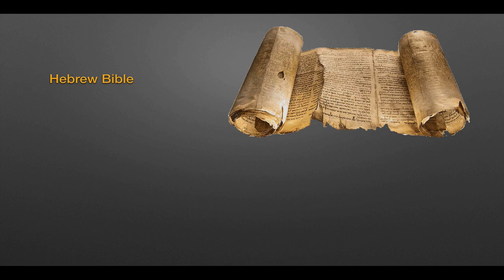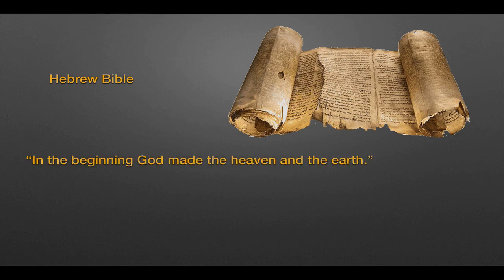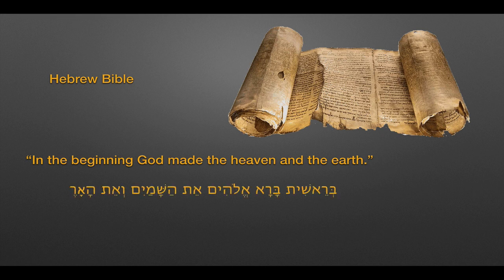In broad strokes, we need to begin with the composition of the Hebrew Bible. At some point between the 13th century — the putative date of Moses — and more likely the 8th or 7th or 6th century, the Hebrew Bible begins to be composed. And so we get books like Genesis: 'In the beginning, God made heaven and the earth.' In Hebrew: Bereshit Barah Elohim, Ed HaShemayim, Va'ed HaAretz. That's what it'll look like if you buy yourself a Hebrew Bible.